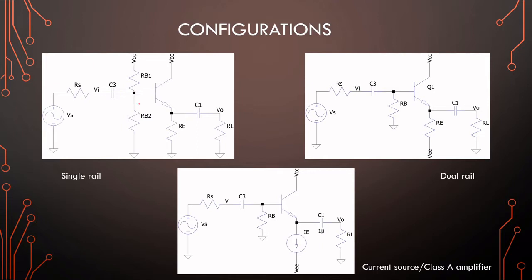Three typical configurations: first is the single rail using voltage divider bias and emitter stabilization. Then the dual rail where the bottom is responsible for the bias current and the top part is responsible for the swing. And the same goes for the class A amplifier with a current source.